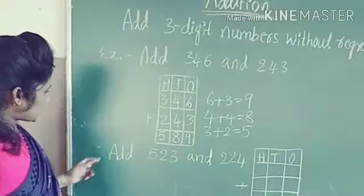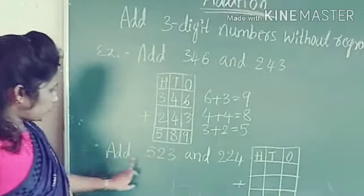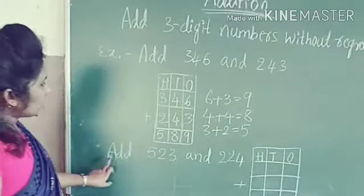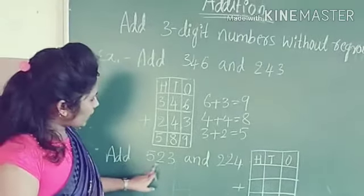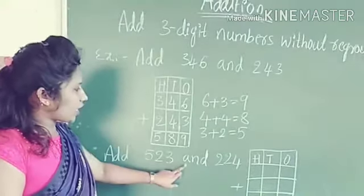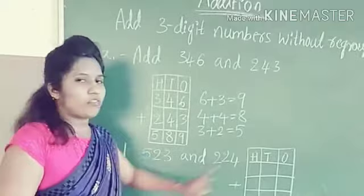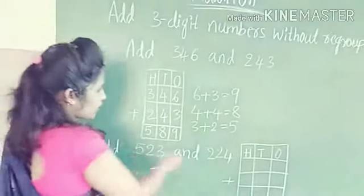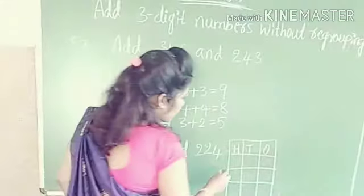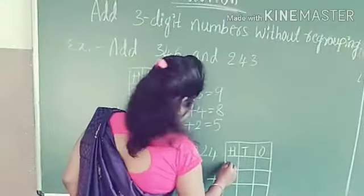Let's see one more example. Add 523 and 224. First we arrange the numbers vertically.